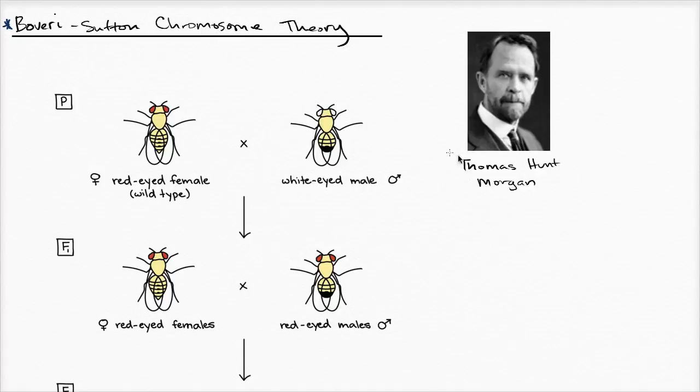We don't really start to get that until we start looking at the work of Thomas Hunt Morgan. In 1908, he decides to study fruit flies. Why fruit flies? They're very small, so you could put a ton of fruit flies in one jar. That's convenient. They were cheap, and that's another practical concern of science.